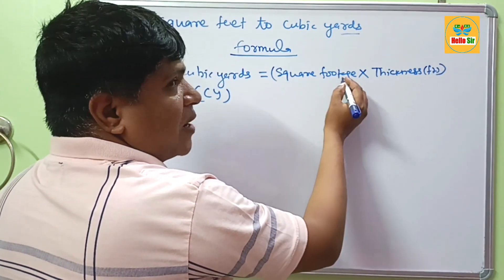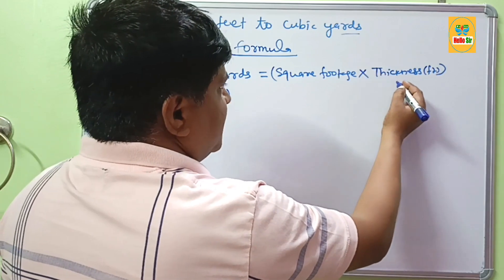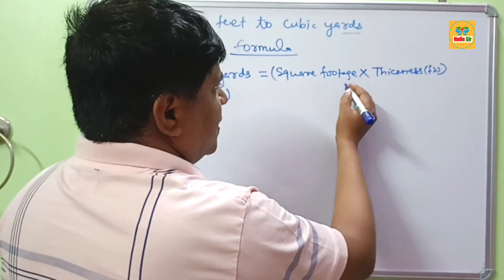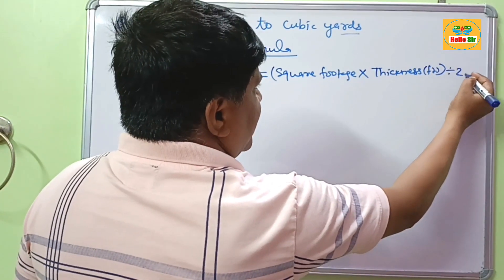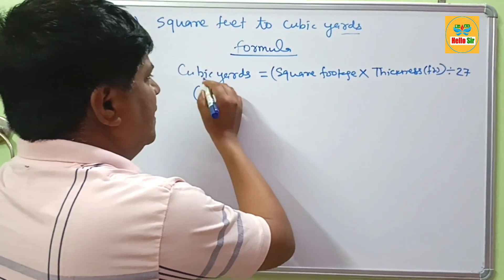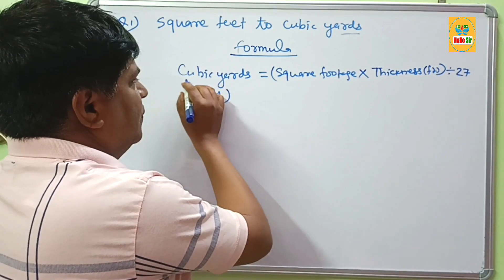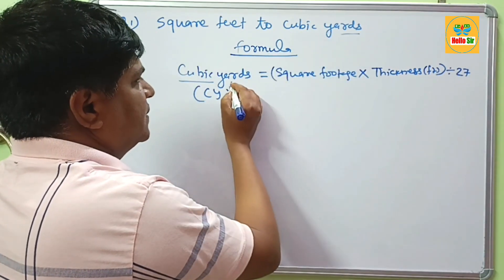If you multiply the square footage and thickness, you get the measurement in cubic feet. The total amount of cubic feet is divided by 27 to find out the cubic yards. It means you want to convert square feet to cubic yards.